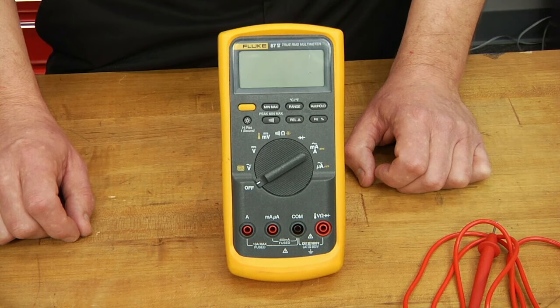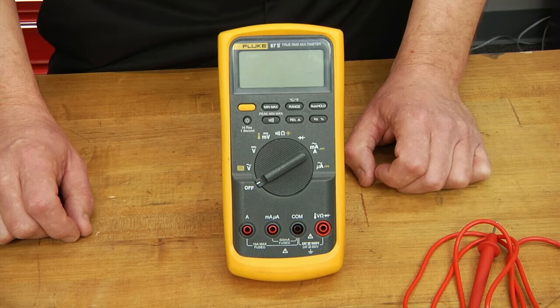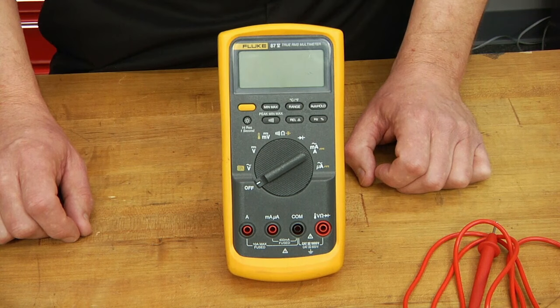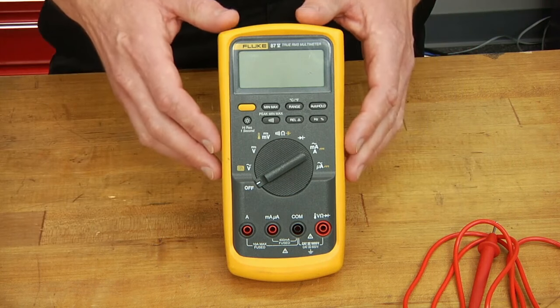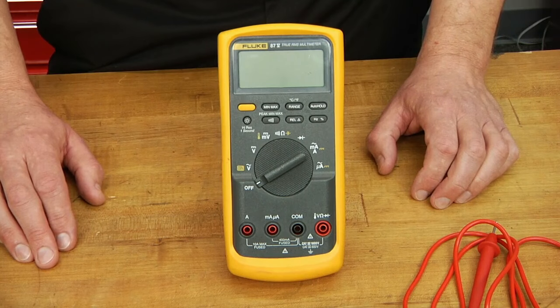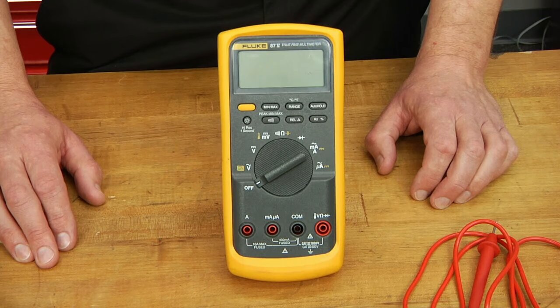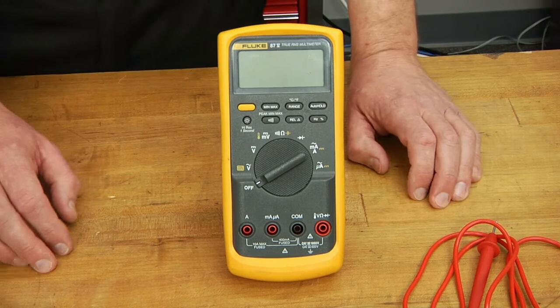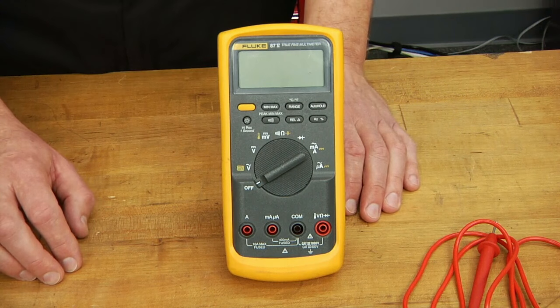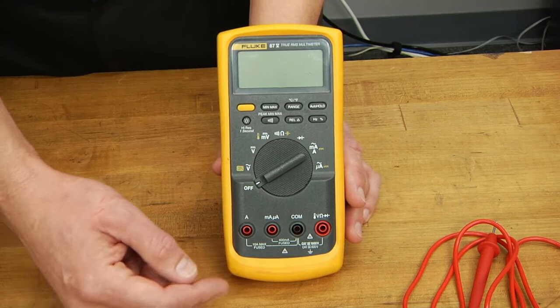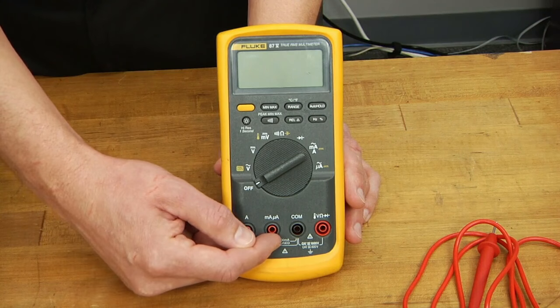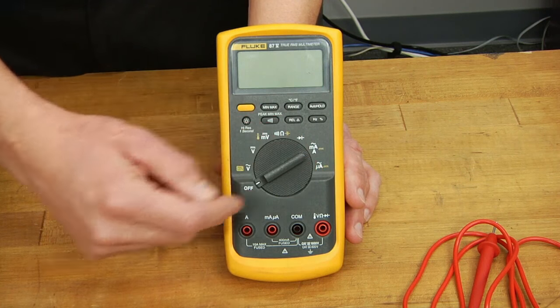Before we actually measure a current on a circuit, let's talk a little bit about the tool we use to do that. For our purposes, we'll be using a Fluke 87 digital multimeter. Your meter may differ slightly, but the basic operation should be the same. The important points that you want to understand about the meter are the input jacks and the rotary dial.